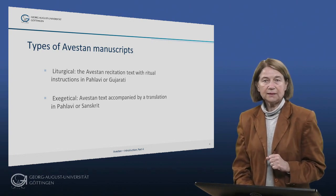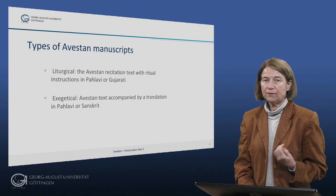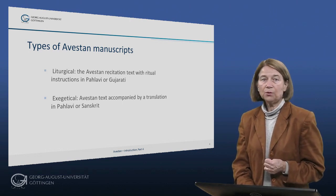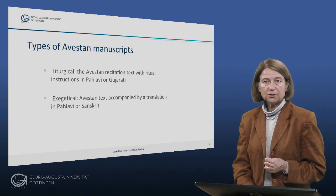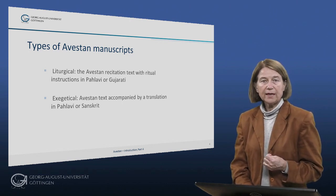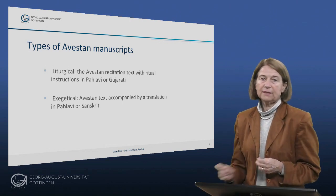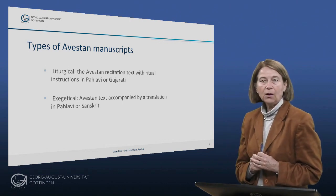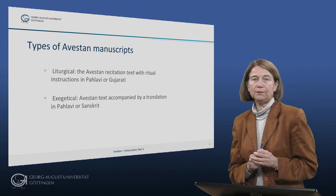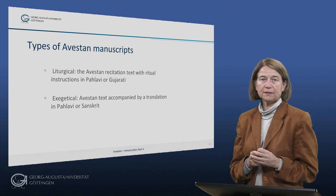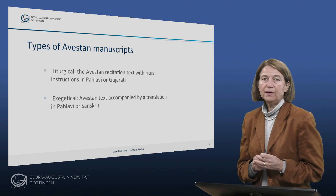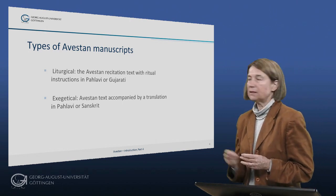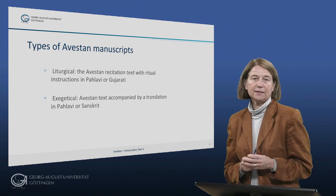Once the script was created they must have started to use it for writing Avestan. They could of course have used it for writing any text, and this would in all probability have included the rituals. The manuscripts that survive to the present day are of two types. They either offer the Avestan recitation text accompanied by ritual instructions in Pahlavi or Gujarati — these are usually referred to as liturgical manuscripts — or they offer the Avestan text accompanied by a translation in Pahlavi or Sanskrit, and these are usually referred to as exegetical.